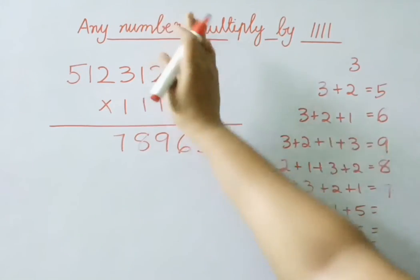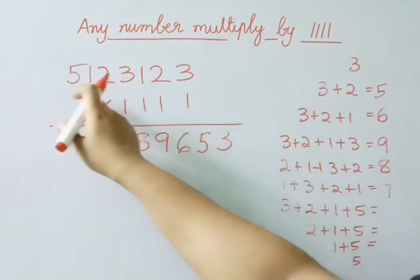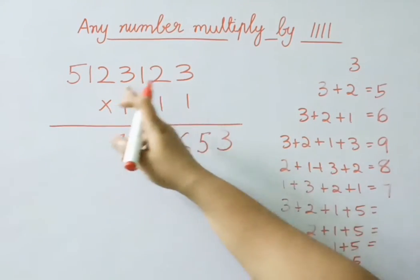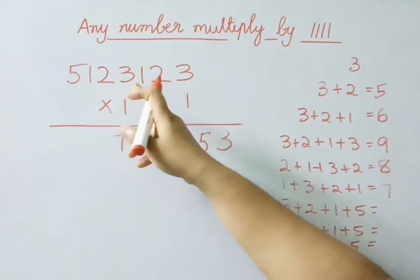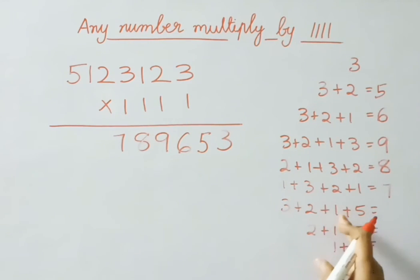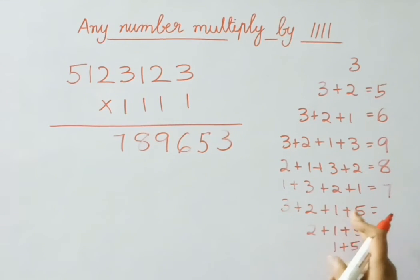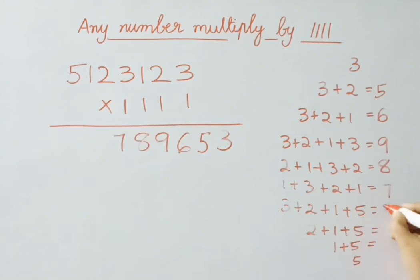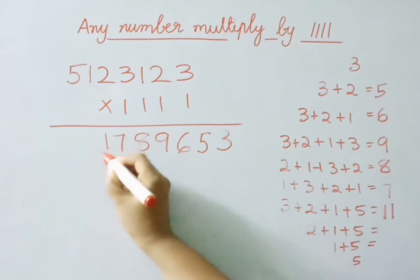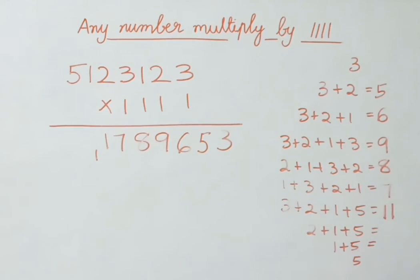Now leave these 3 digits, then add those 4 digits: 3 plus 2 is 5, 5 plus 1 is 6, 6 plus 5 is 11. So what we are going to do: write 1 and carry 1.